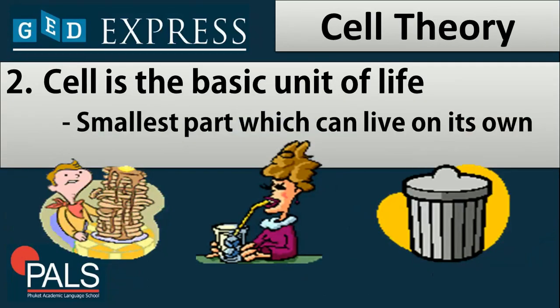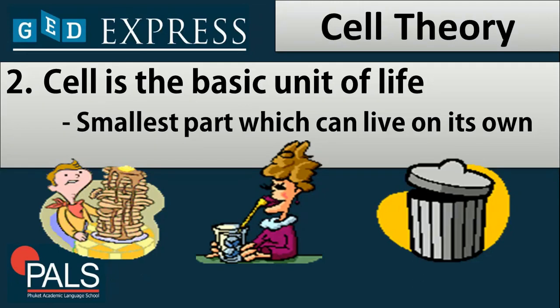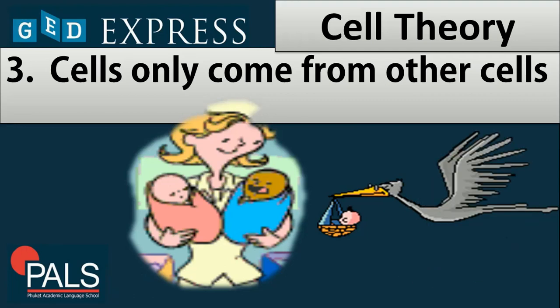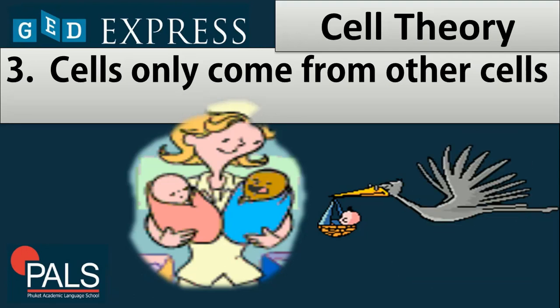The next statement under the cell theory is that the cell is the basic unit of life, also discussed in the previous screencast. Under the cell theory, it is believed that the cell is the smallest part in which a living thing can live on its own. For the last statement, supported by Rudolf Virchow, cells only come from other cells.